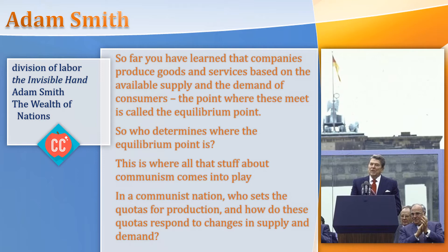Adam Smith on the benefits: 'It is the great multiplication of the productions of all the different arts, in consequence of the division of labor, which occasions in a well-governed society that universal opulence which extends itself to the lowest ranks of the people.' Translation: because all sorts of jobs have been divided, so much more is able to be produced in the same period of time, and because this has been accomplished in a well-governed, free society, all of the goods and services that came as a result of the division of labor are available to every individual within that society.